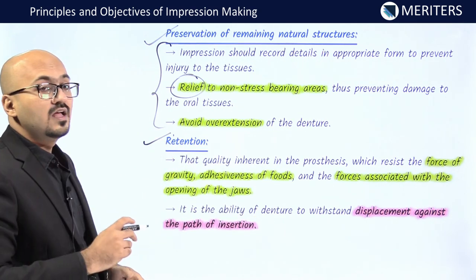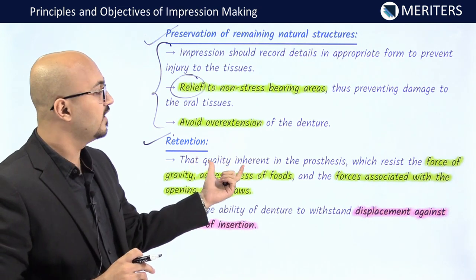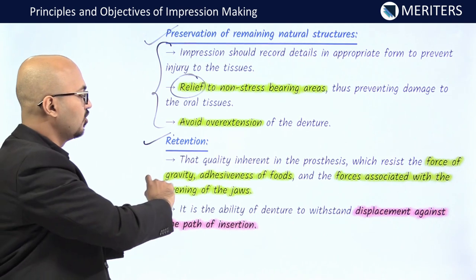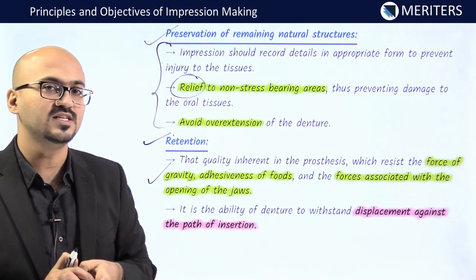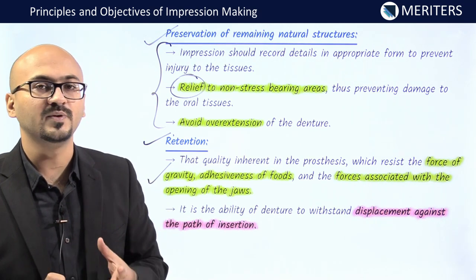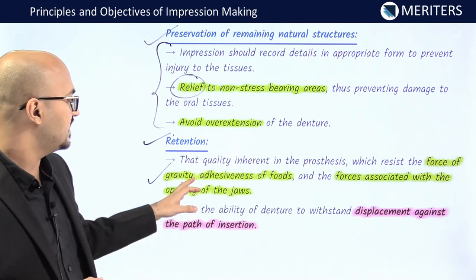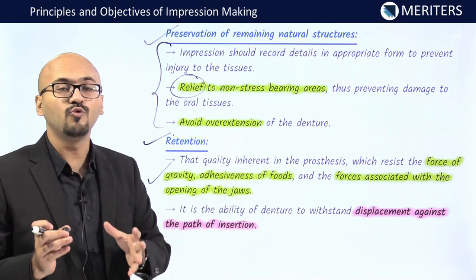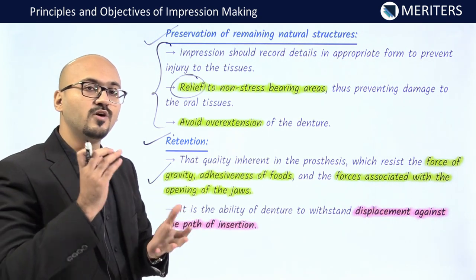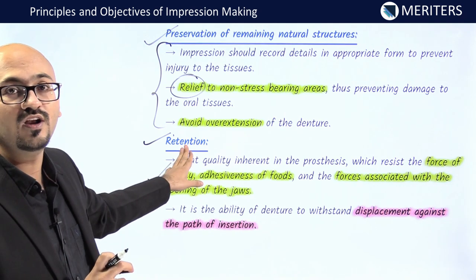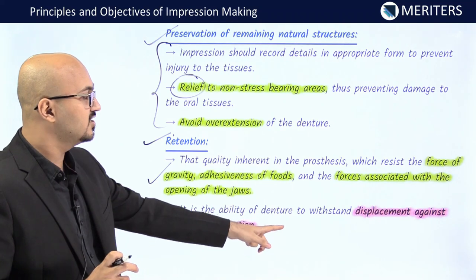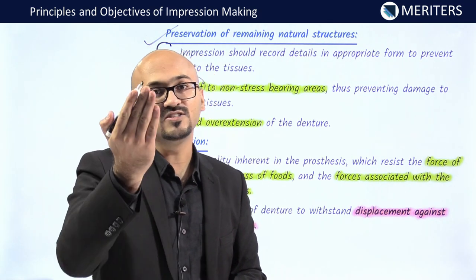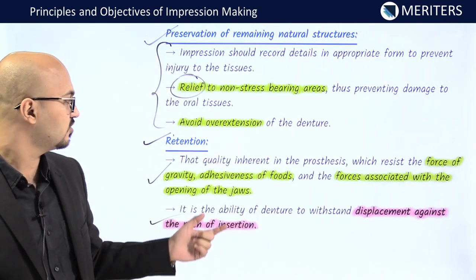The second objective is retention. Retention is the inherent quality in the prosthesis that resists the force of gravity, adhesiveness of food, and forces associated with opening of the jaw. When the patient is chewing, the prosthesis should not pop out; when yawning, it should not drop down. Forces from sticky foods like toffee or chewing gum should not affect movement of the denture base on the ridge. It is the ability of the denture to withstand displacement against the path of insertion.